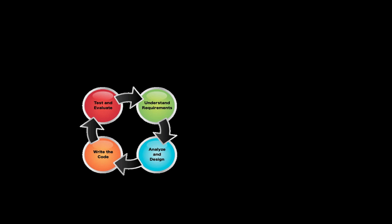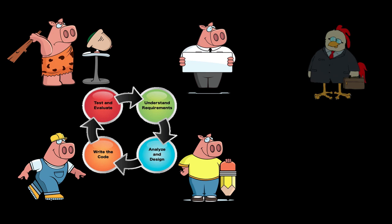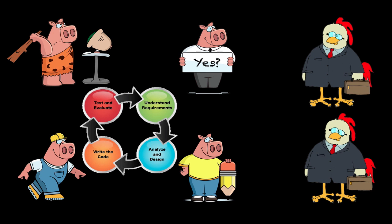Frequent communication among all involved parties, pigs and chickens, is encouraged throughout the sprint. This helps to ensure that a project never heads too far in the wrong direction before being corrected.